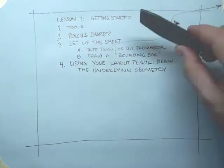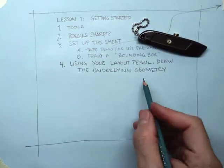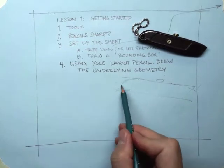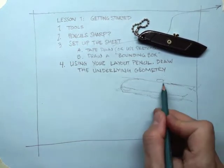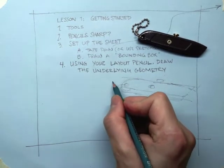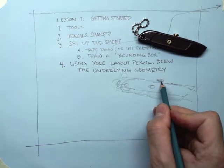The next step is to use your layout pencil to draw the underlying geometry of the part or object that we are trying to depict. Make these lines quick, seeking, repetitive. Don't worry about getting them right the first time. The goal here is to lay down the lines that you will follow with your next step.